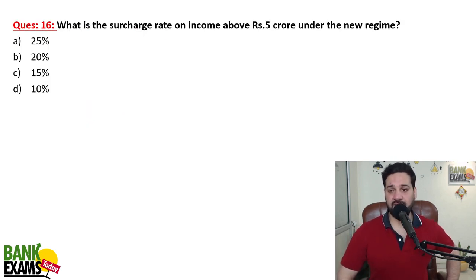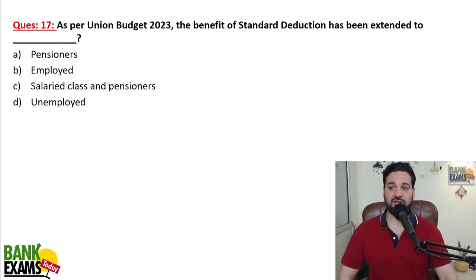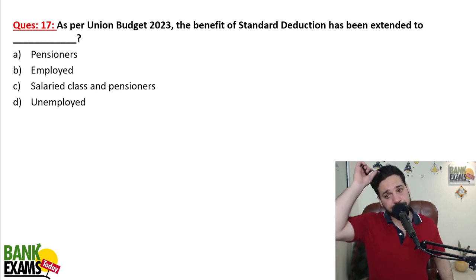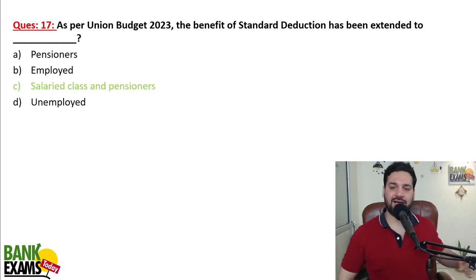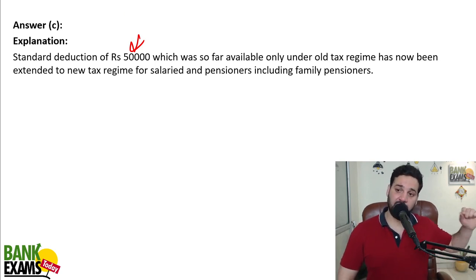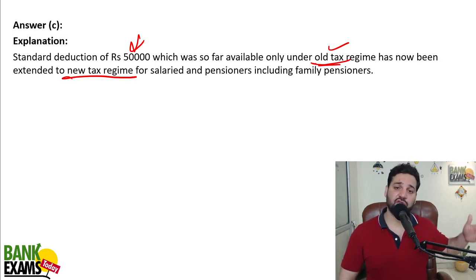What is the surcharge rate on income above 5 crore under the new regime? Under the new regime, surcharge was 37% but now it is 25%. The benefit of standard deduction — salaried persons ko zyada tax deductions nahi milti, so the government introduced standard deduction. It is available to salaried class and now extended to pensioners — 50,000 ka standard deduction, now available under the new tax regime as well.